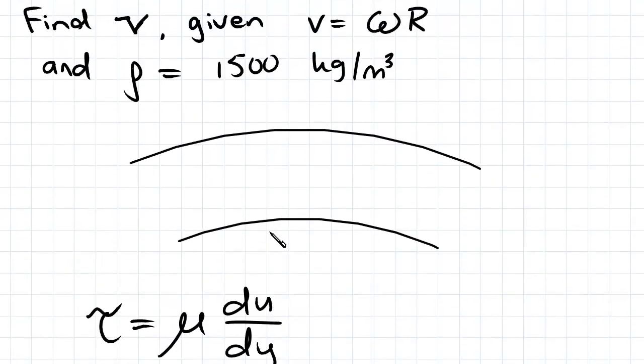So looking at a small section of the cylinders, this is the inner cylinder here, the outer cylinder. The velocity profile, because we can assume it is a Newtonian fluid.